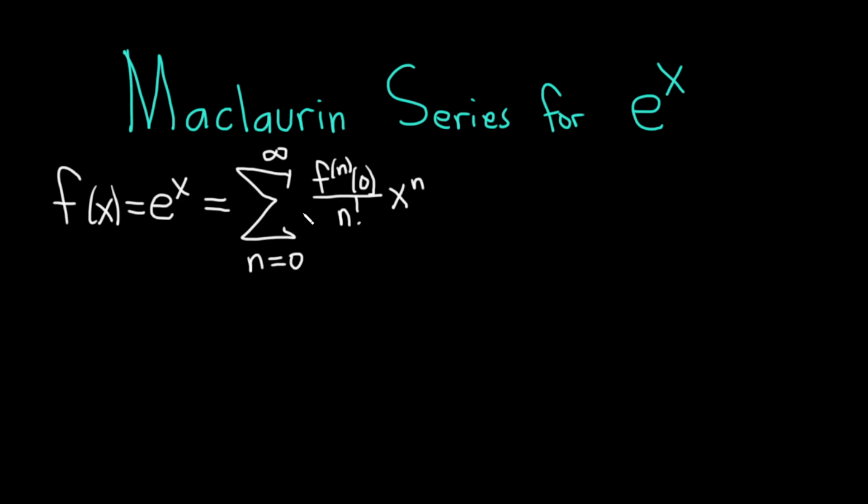This is actually pretty easy to figure out because if you have f of x equal to e to the x, then the nth derivative is just going to be e to the x because the derivative of e to the x is always e to the x. So when you plug in 0 you get e to the 0 which is 1.